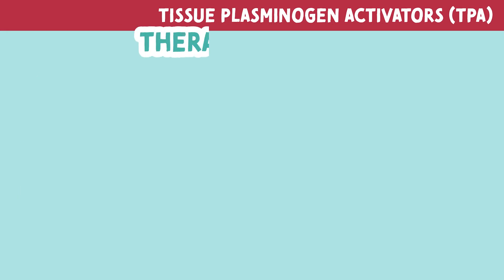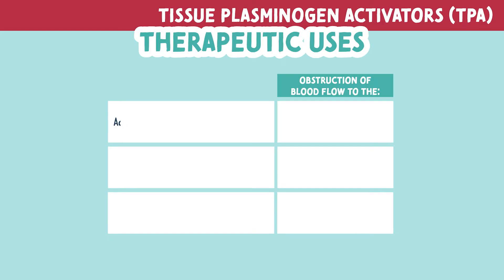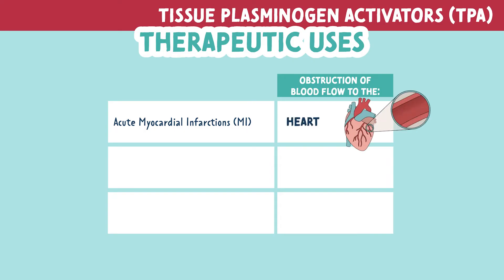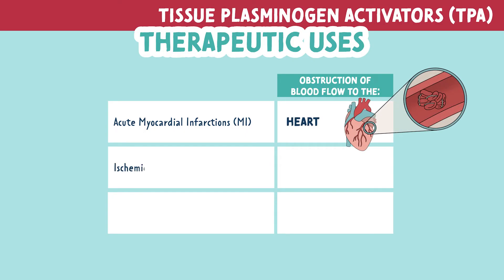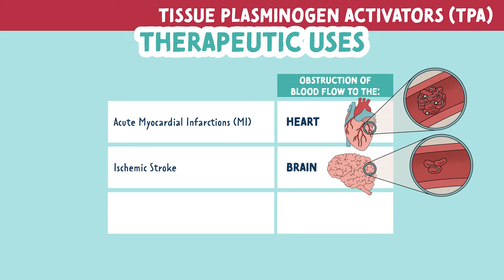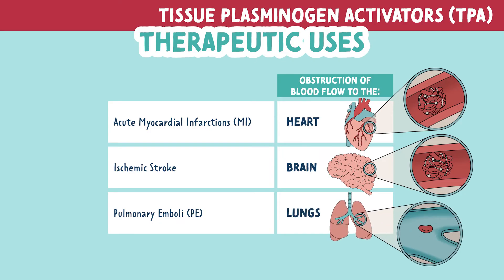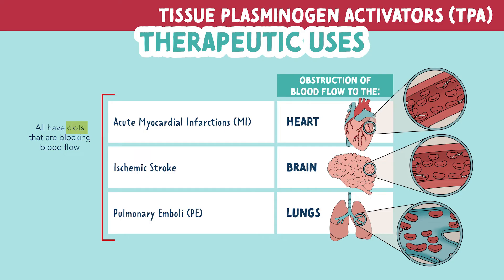Let's look at some therapeutic uses. TPAs are used for acute myocardial infarctions, which is obstruction of blood flow to the heart caused by a clot; ischemic stroke, which is an obstruction of blood flow to the brain caused by a clot; and pulmonary emboli (PE), which is an obstruction of blood flow to the lungs caused by a clot. All of these involve clots blocking blood flow, and TPAs work as clot busters improving blood flow to the heart, brain, and lungs.